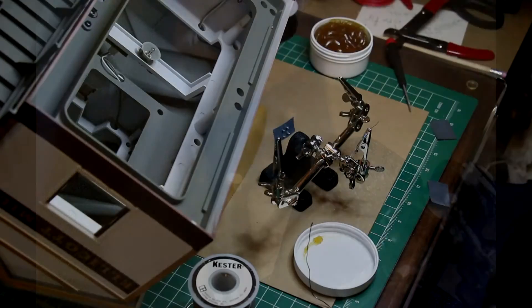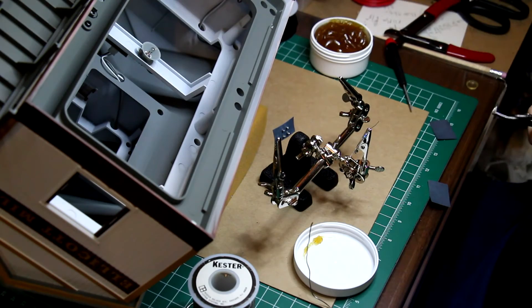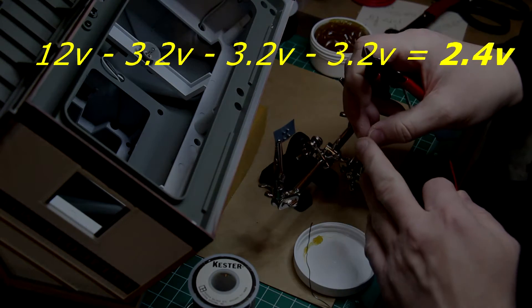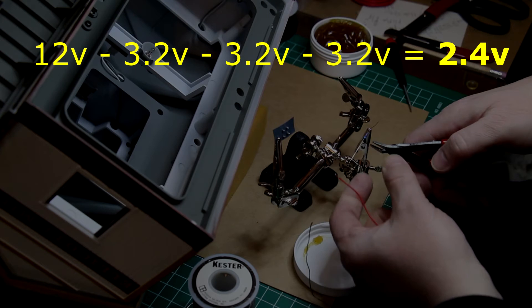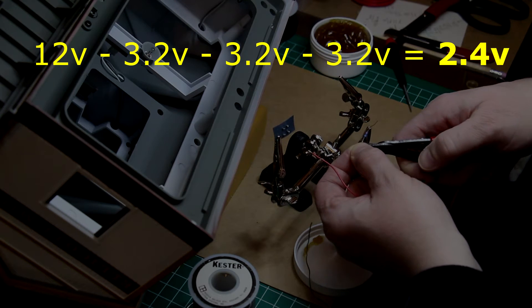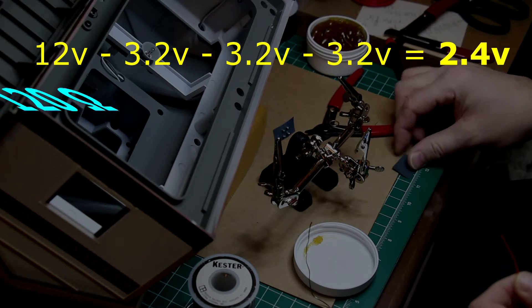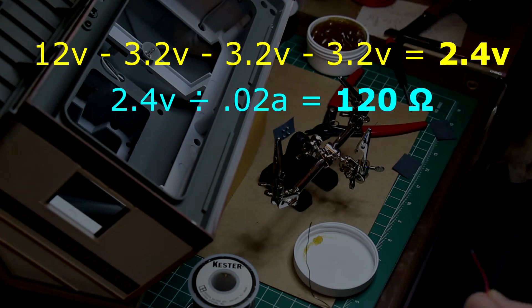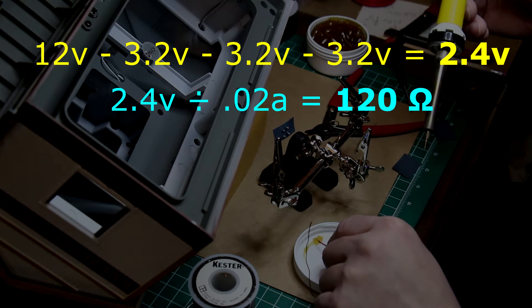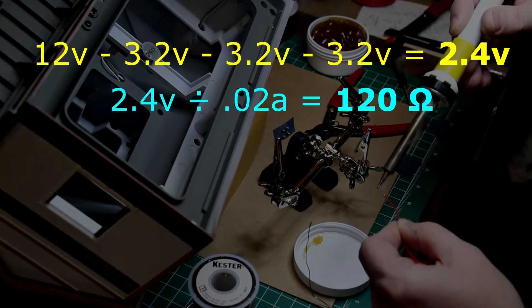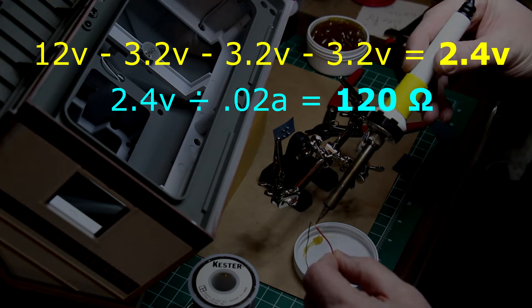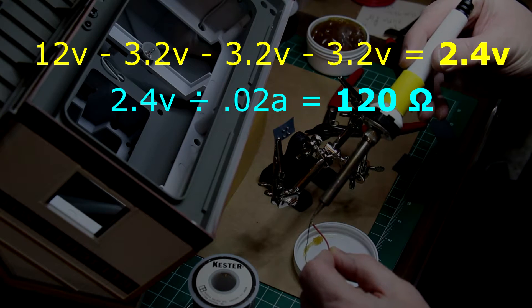Now let's play with the resistor math. My 12 volt source voltage minus 3.2 volts each for my LEDs leaves 2.4 volts leftover. That 2.4 volts divided by 20 milliamps or 0.02 amps yields a 120 ohm resistor required for my circuit.